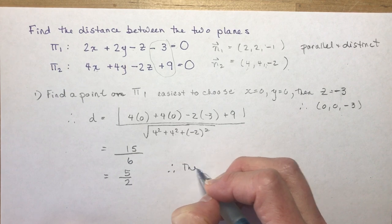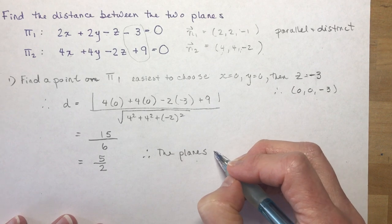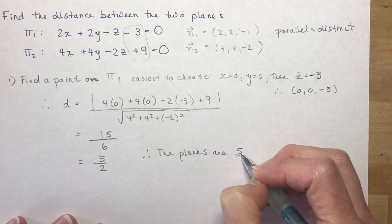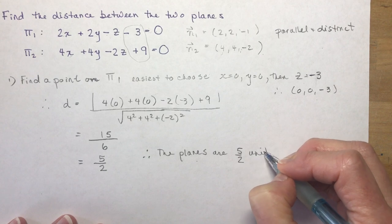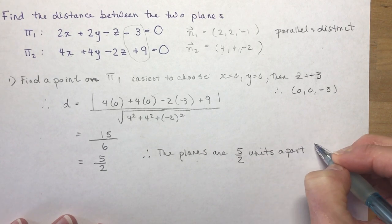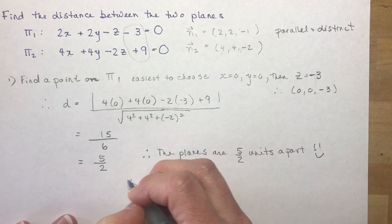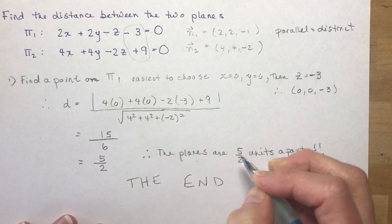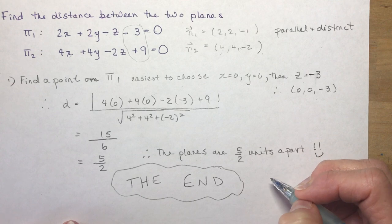Therefore, the planes, oh I'm so sad to write this last line because it's the end of the lesson. Therefore, the planes are 5 halves or 2.5 units apart. So maybe I should write the end, just like in the movies. Does that make you sad or happy? Some of you are going on to calculus, and some of you, this will be happening in June and you're going to say hooray, I'm finally finished with this course.